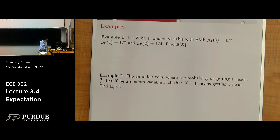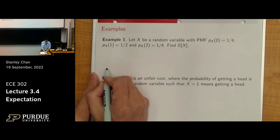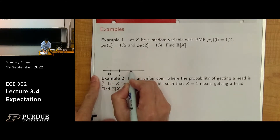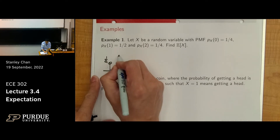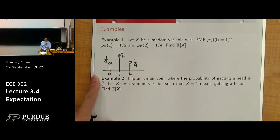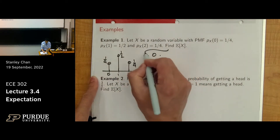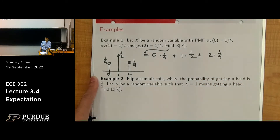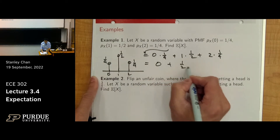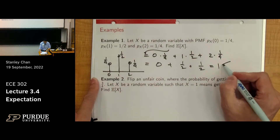Let's go to some examples. In the first example, you have a probability mass function of a random variable x with three states: 0, 1, and 2. For state 0 you have a height of 1/4, for state 1 you have 1/2, and for state 2 you have 1/4. The expectation would be 0 times 1/4, plus 1 times 1/2, plus 2 times 1/4. That gives 0 plus 1/2 plus 1/2, which equals 1. So the expected value is 1.